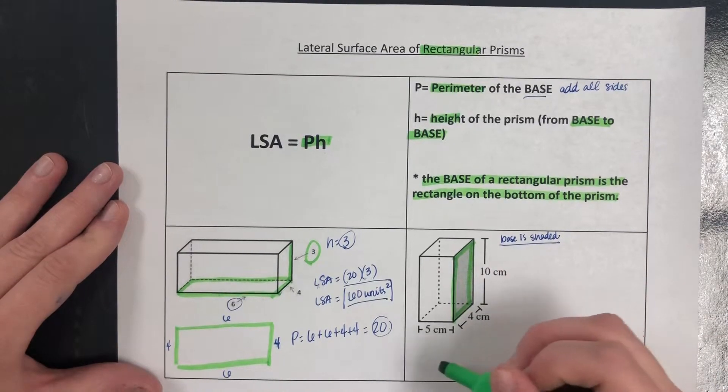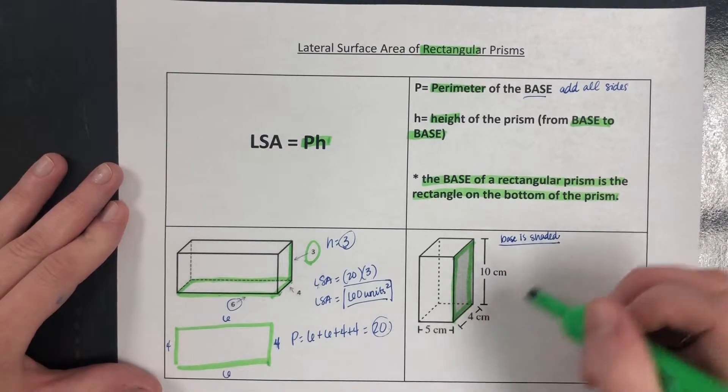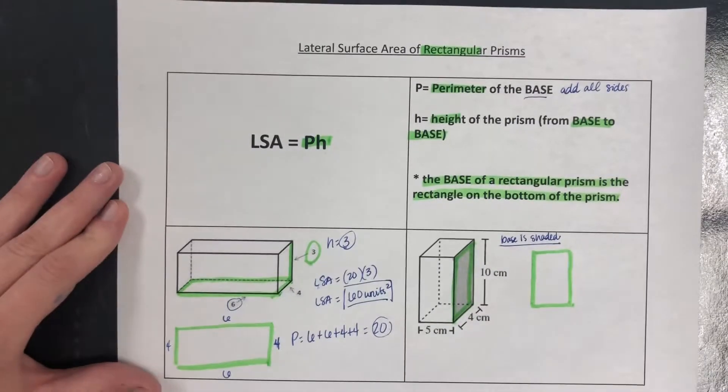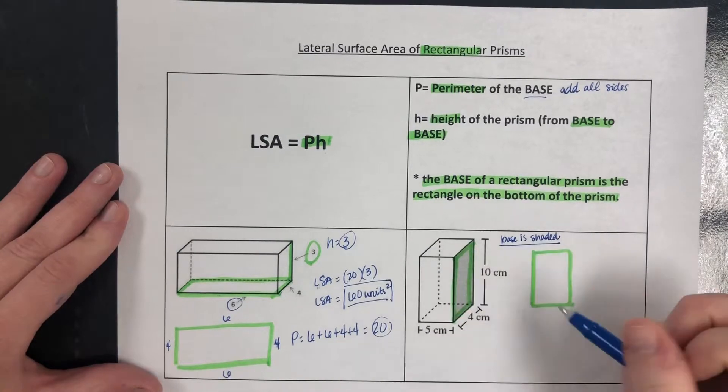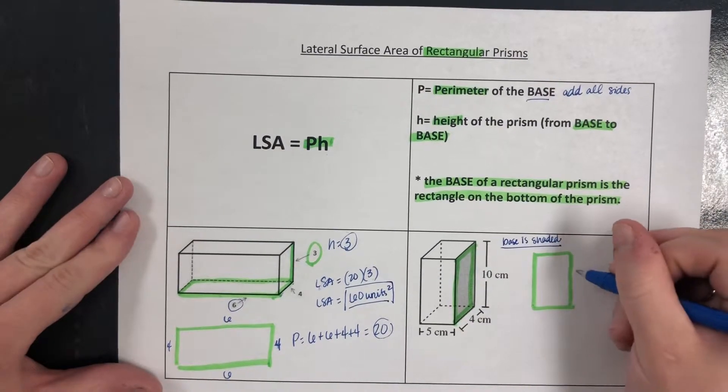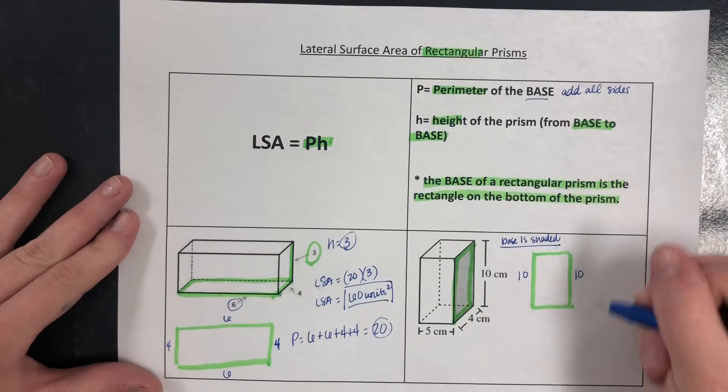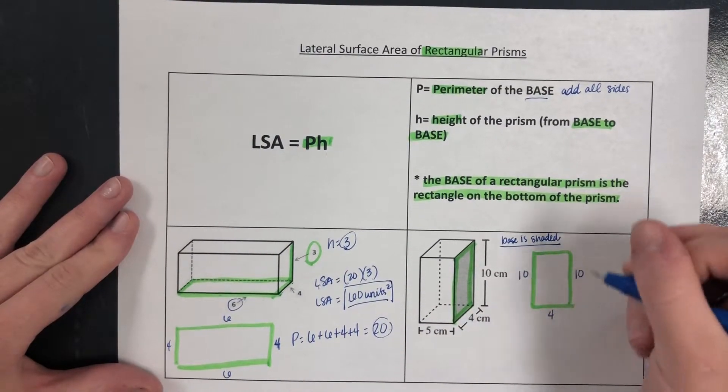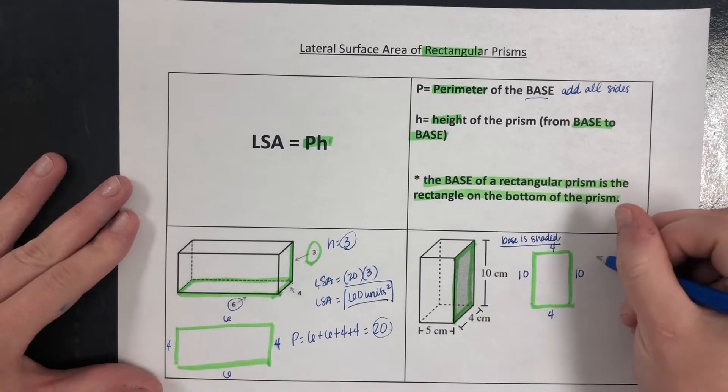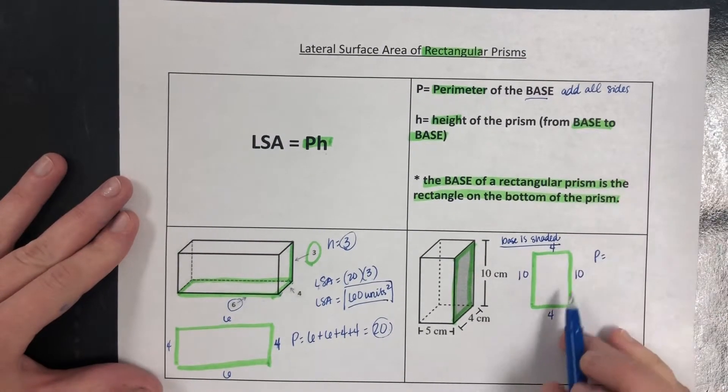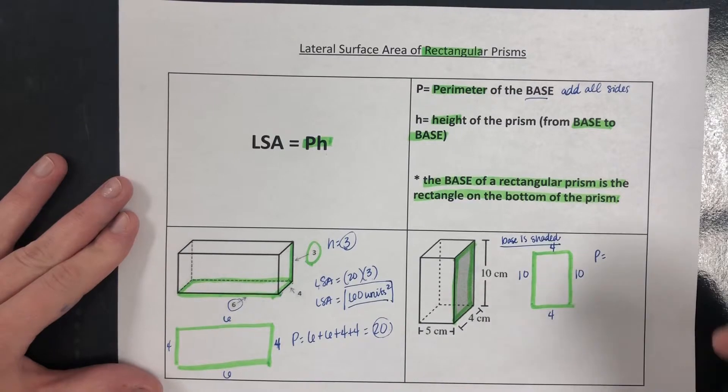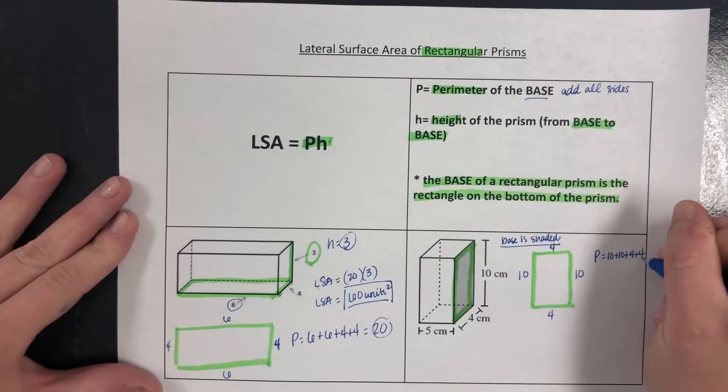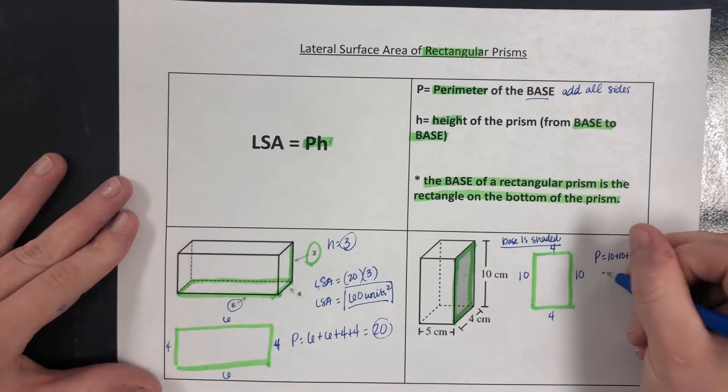I'll just come over here and redraw that. We'll draw it over here since it's kind of standing up. The long side here is 10, so that means the opposite is 10. The short side on the bottom is 4, that means the top is 4. So P, the perimeter of the base, is going to come from this shape here. We just add 10 plus 10 plus 4 plus 4, and we get 28.